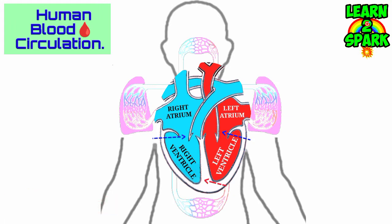The heart has 4 separate chambers. The two upper atria or auricles have thinner walls, as these only receive blood from the body. The two lower chambers are called ventricles, which have thick muscular walls to pump blood out of the heart against gravity.